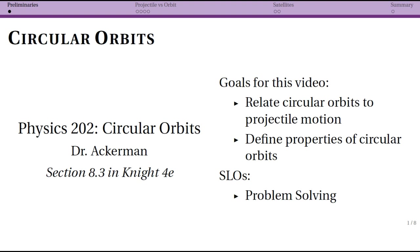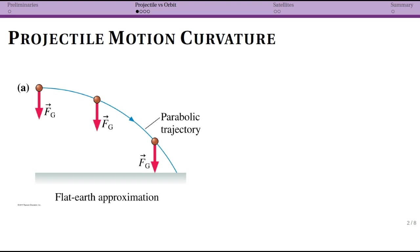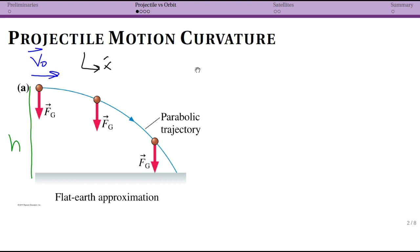First, let's look at projectile motion versus circular orbits. There's a curvature to projectile motion that normally we use the flat Earth approximation for. Our projectile, if we think of it as having some initial height h, can be given an initial velocity in the horizontal x-direction. We see that there's a curvature, but we say that the earth is flat. The particle curves downwards and eventually gets to the earth. But of course, the flat Earth approximation is only an approximation.